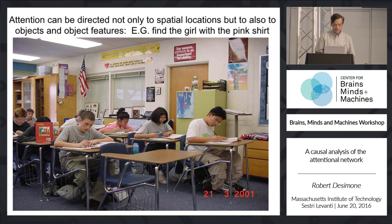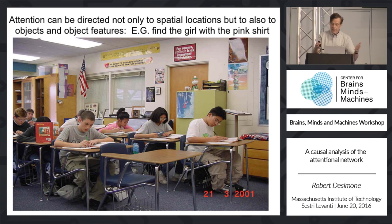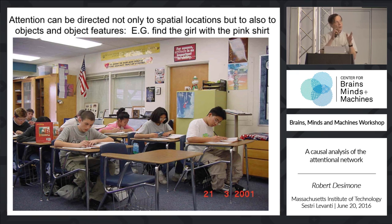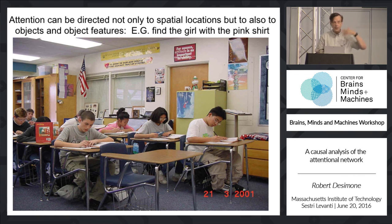To give you an example of how you use feature attention all the time: if I ask you to find the girl in the pink shirt in a scene, you can all do that very quickly, with far fewer eye movements than there are objects in the scene. But this is really a mysterious process. If I tell you to pay attention to the upper left-hand corner of the visual field, that's not so mysterious — we have lots of spatial maps in our brain. But where's the map of girls in pink shirts?